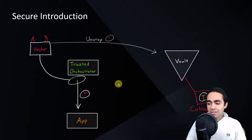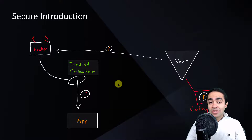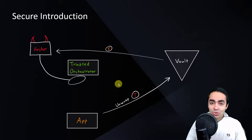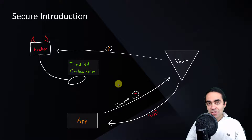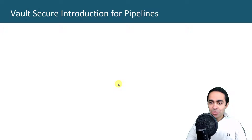What happens if a bad actor intercepts the wrapped token? The hacker tries to get to Vault to unwrap it — Vault responds with the real yellow token and the cubbyhole disappears. Now when the application tries to unwrap that token, Vault responds with a 400 error. This should trigger an audit notification, because someone already unwrapped the token. This is exactly the goal of detecting unauthorized access — an investigation needs to take place.